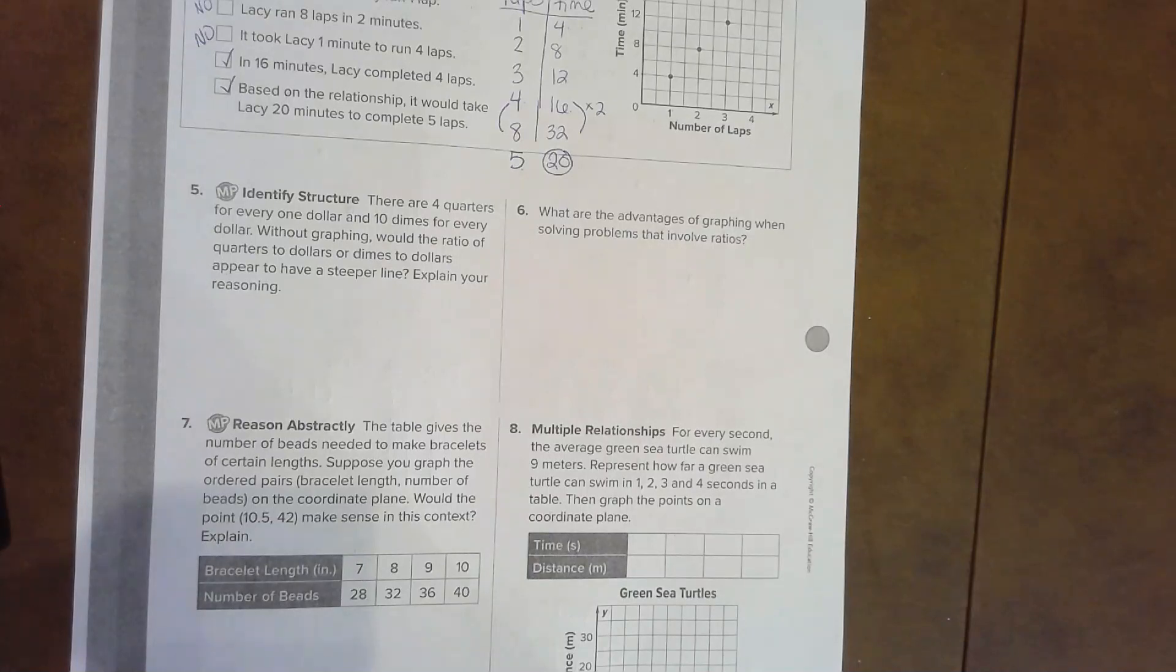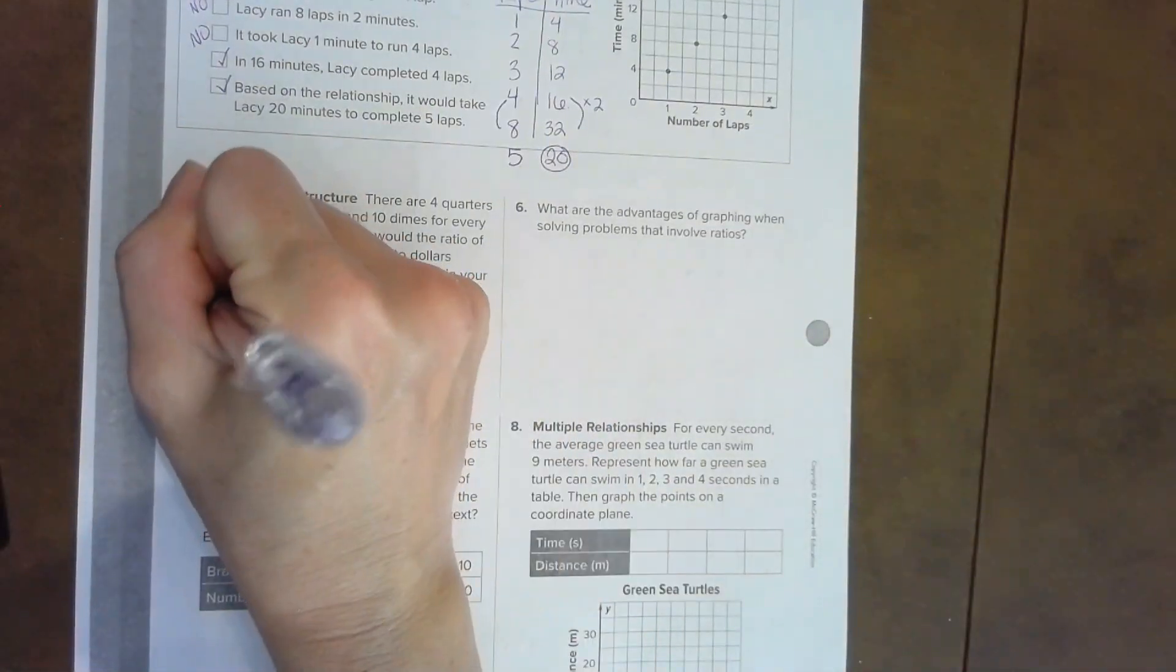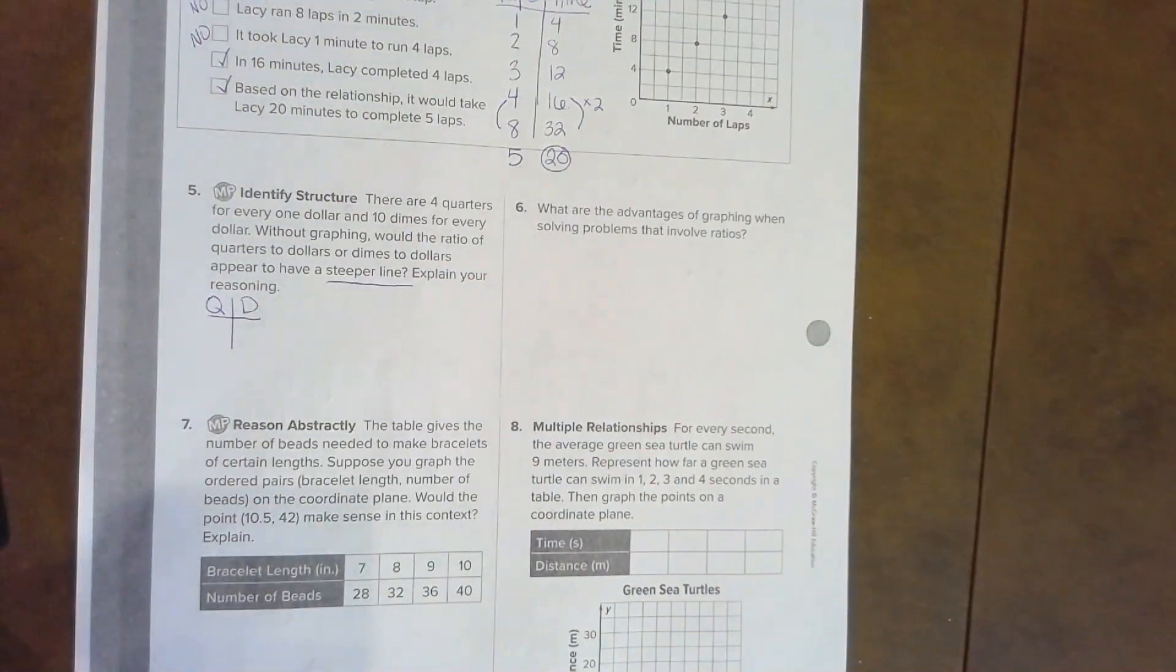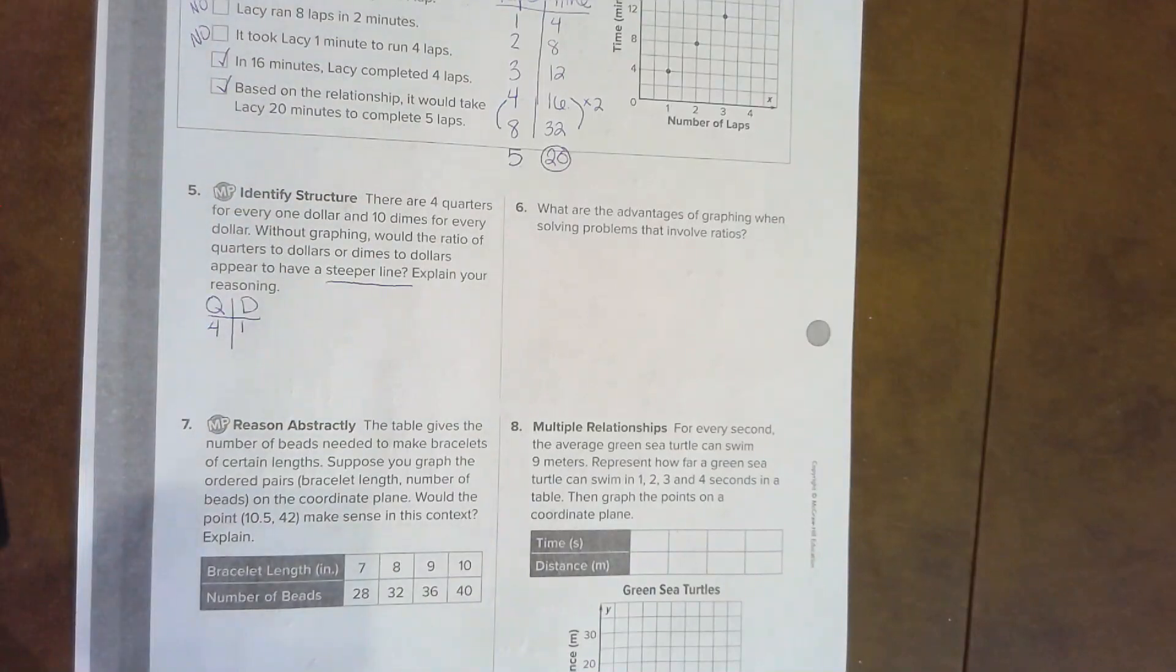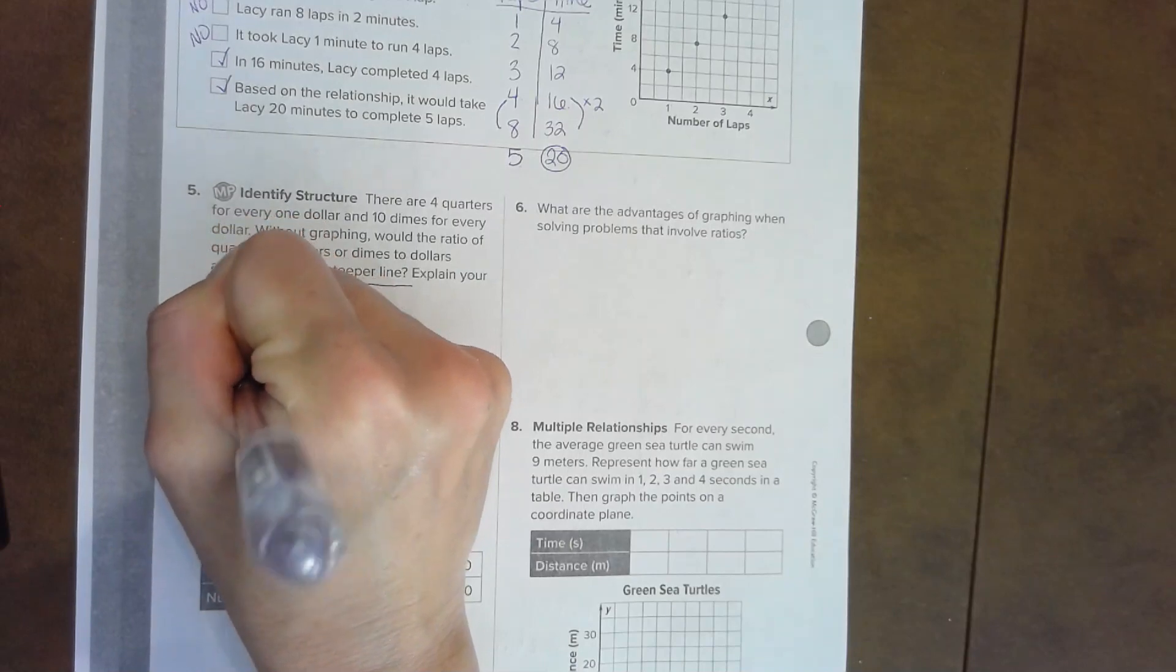Let's do number five. Identifying structure. There are four quarters for every one dollar and ten dimes for every dollar. Without graphing, would the relationship with the ratio of quarters to dollars or dimes to dollars appear to have a steeper line? Well, we can do a quick table to prove this. So quarters to dollars, Q to D, and we know that's four quarters to one dollar. And let's just put a couple numbers: four, eight, twelve, one, two, three.